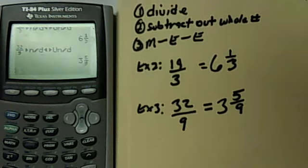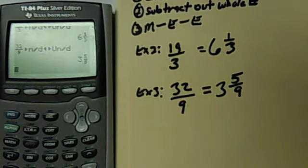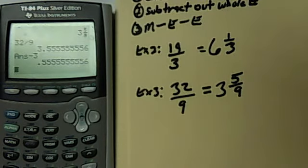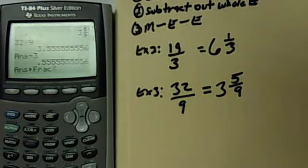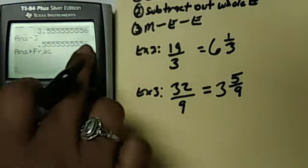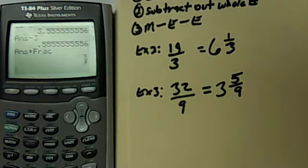Again, if I wanted to do this same one without using it, I would have my 32 over 9. I would subtract out my whole number, which is 3 minus 3, and then I would hit math enter enter to change the rest of that decimal that's left into 5 ninths. Please do not try to type this out. This decimal: just subtract out the whole number and then hit math enter enter. And that is how I change my fraction into a mixed number.